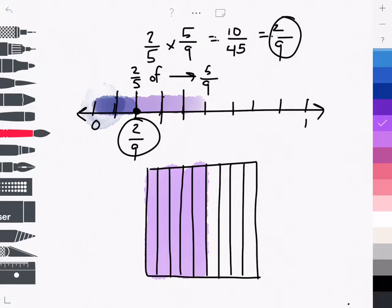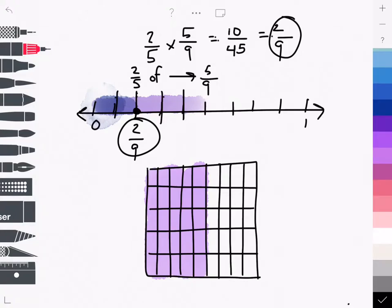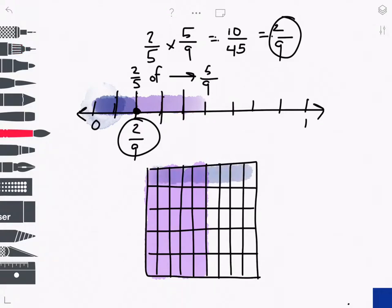Now I want to find 2/5 of 5/9. So I've got to segment this rectangle into fifths. Here we go, 5/5. And I'm going to highlight 2/5. There's 1 and 2/5.